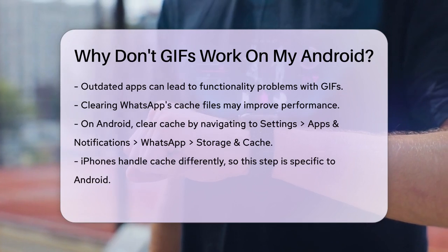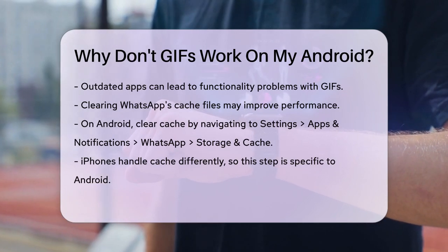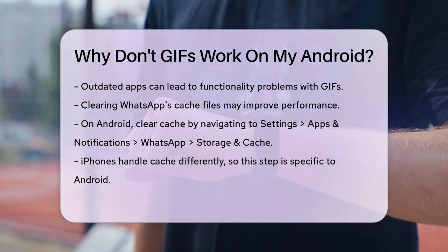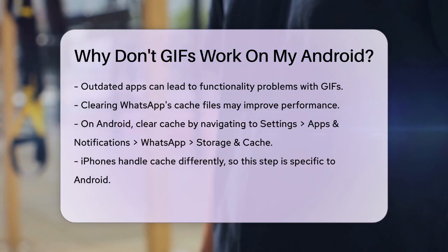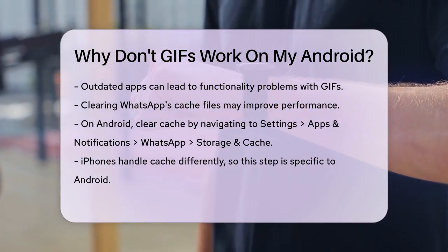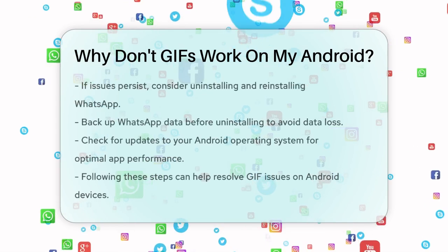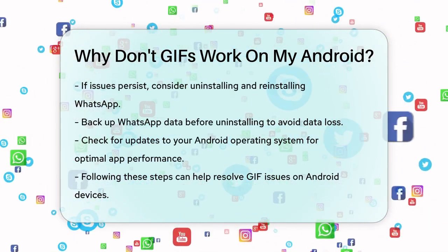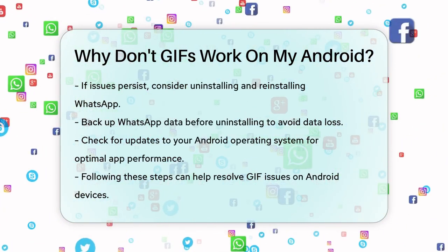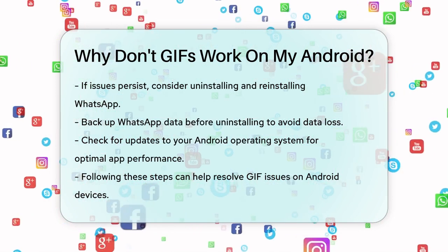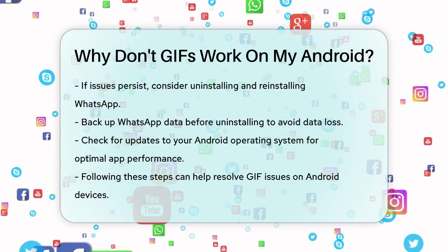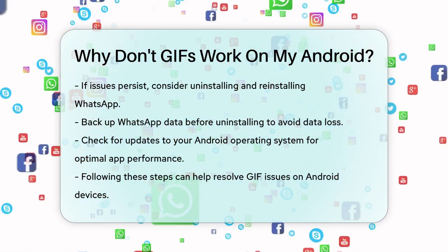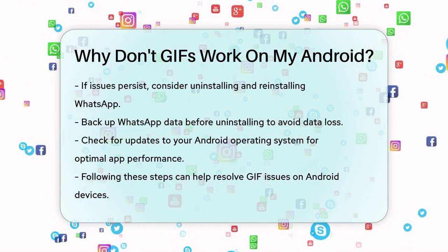If none of these solutions work, you might need to uninstall and reinstall WhatsApp. Before uninstalling, make sure to back up your WhatsApp data. Go to WhatsApp, Settings, Chats, Chats Backup, then tap Backup Now. After backing up, uninstall WhatsApp, then reinstall it from the Play Store, and restore your backup when prompted.